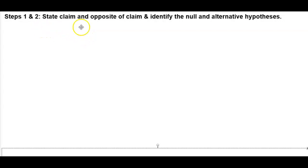Steps 1 and 2: State the claim and the opposite of the claim, and then identify the null and the alternative hypothesis.